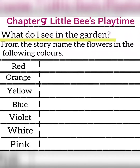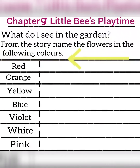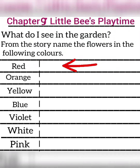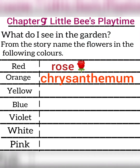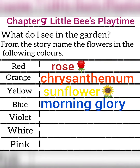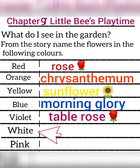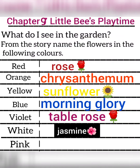What do I see in the garden? From the story, name the flowers in the following colors. Red — Rose. Orange — Chrysanthemum. Yellow — Sunflower. Blue — Morning Glory. Violet — Table Rose. White — Jasmine. Pink — Lily.